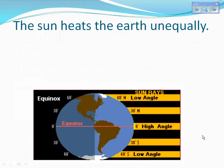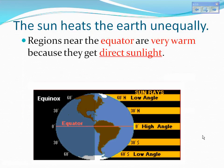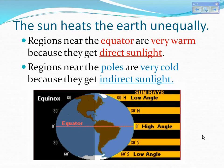The sun heats the earth unequally, as you can see in the diagram. Regions near the equator are very warm because they get direct sunlight. Regions near the poles are very cold because they get indirect sunlight.